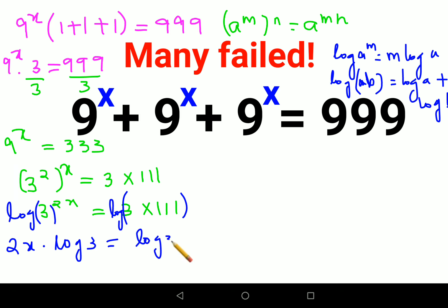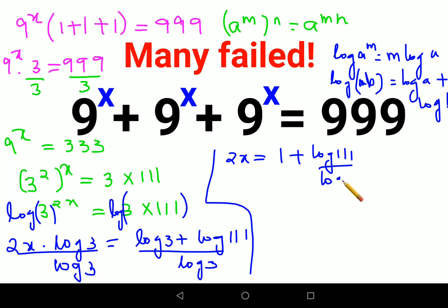To find x, we'll divide both sides by 2 times log(3). This gives us x equals ½ times (1 + log(111)/log(3)). This is one form of the answer.